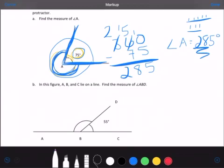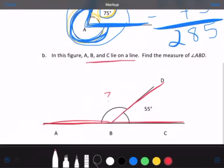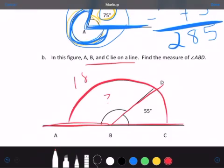Looking at B, in this figure, A, B, and C lie on a line. Find the measure of angle ABD. So I'm looking for A, B, D. And I know that A, B, C create a line. That tells us that angle ABC from here all the way to here would be 180 degrees.